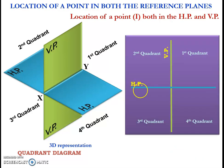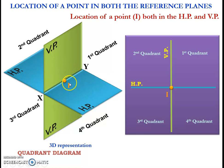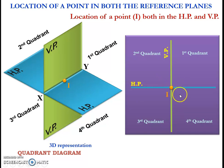Now we will move on to the third category: a point located in both the reference planes. In this case, if you see the 3D representation diagram, the point is located on the x-axis line itself. Then only it can be shared by all the four quadrants. So if you represent the same point in the 2D representation diagram, it will be located exactly at the origin.